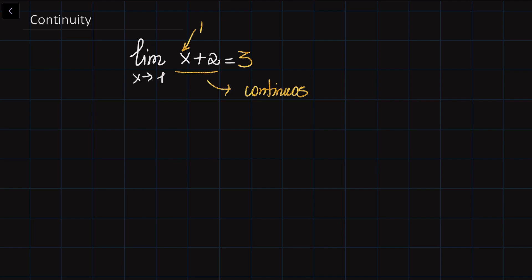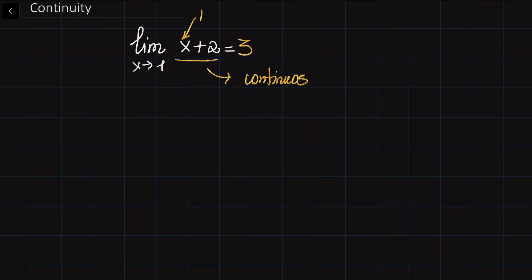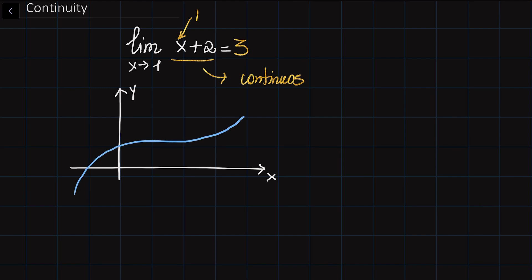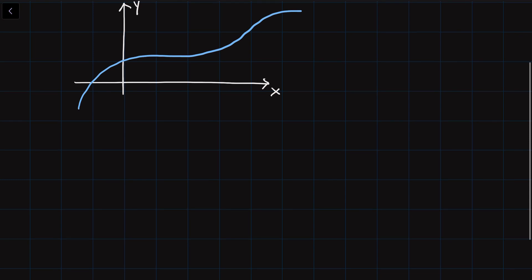Continuous functions. In general, mathematically, the definition of continuous functions is not far from the meaning of the word 'continuous' in our daily life. Essentially, you can say that you can sketch the graph of a continuous function without lifting your pen off the paper. So in this case your function is called continuous. This is a rough definition; now let's look at the precise mathematical definition.